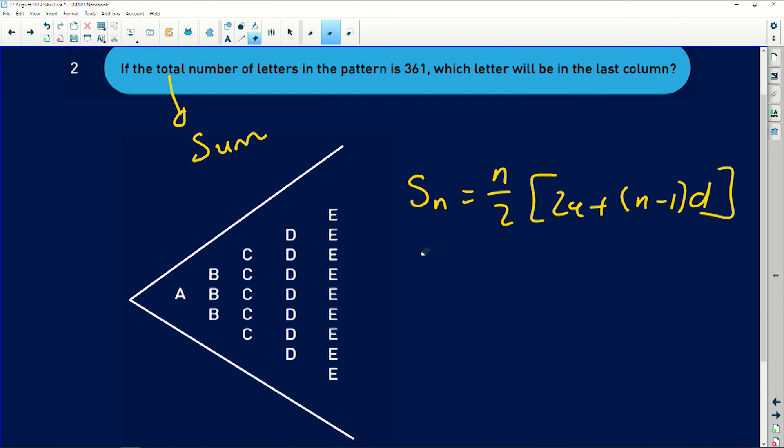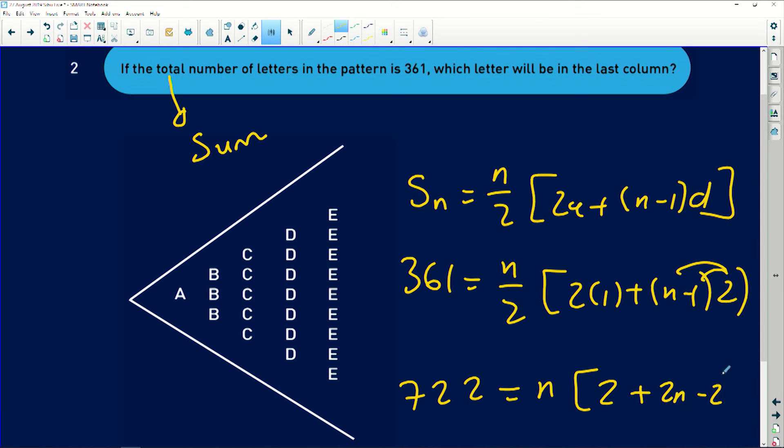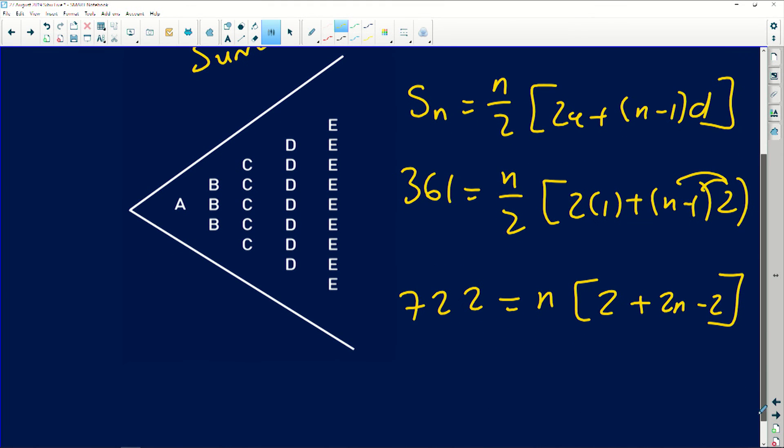So I'm simply going to have in this context 361 equals to N over 2 into 2 into 1 plus N minus 1 multiplied by the difference which is 2. And then if you double that, you'll have 2 times 361 equals to N into... multiplying here and here we're going to have 2, right, plus 2N minus 2.